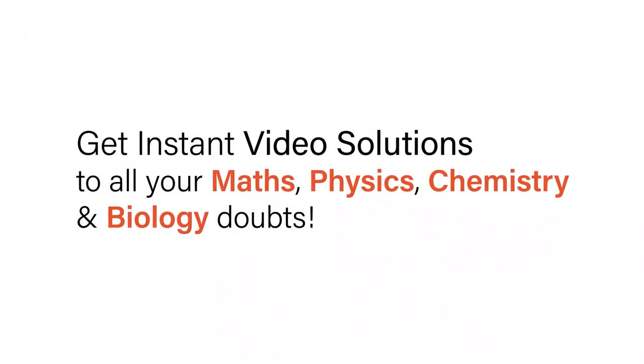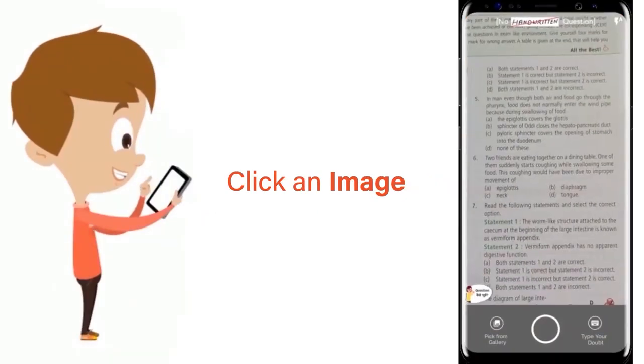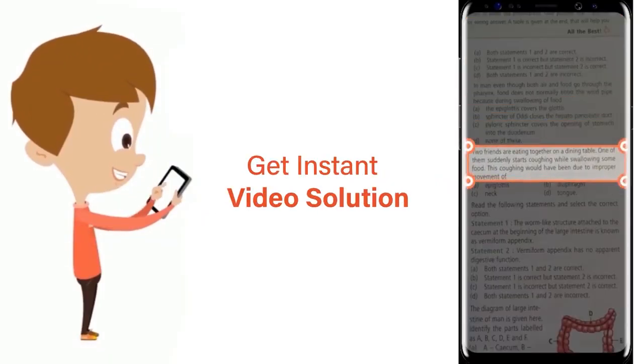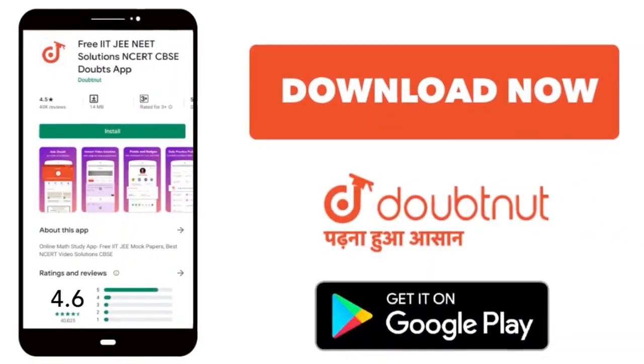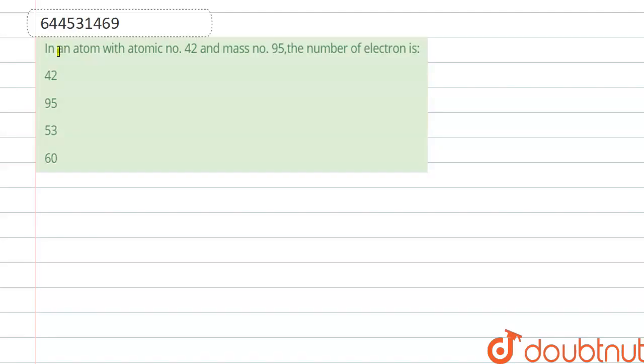With Doubtnet, get instant video solutions to all your maths, physics, chemistry, and biology doubts. Just click the image of the question, crop the question, and get instant video solution. Download Doubtnet app today. Hello everyone, here the question is: In an atom with atomic number 42 and mass number 95, the number of electrons is?